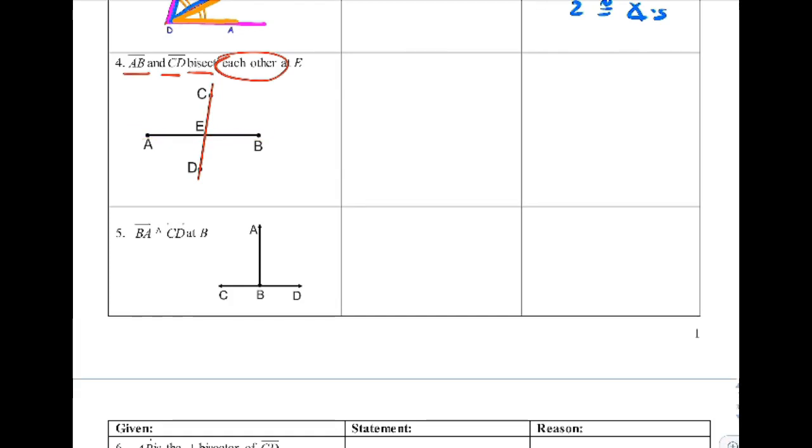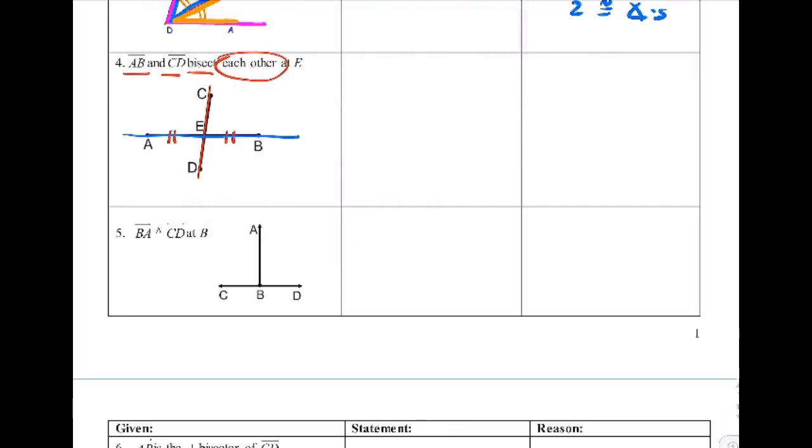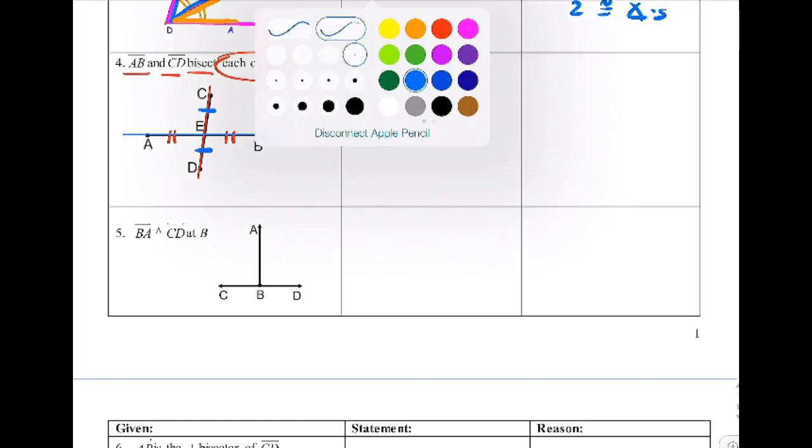So they do the same thing to each other, which means if this comes through AB in the middle, then that's true. And if this one comes through CD in the middle, then that's true. So we actually know a lot just because of the word 'each other.'